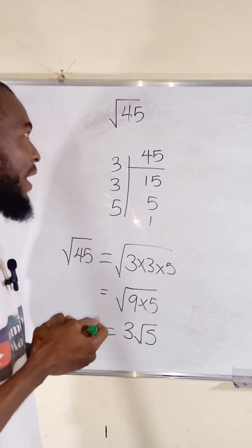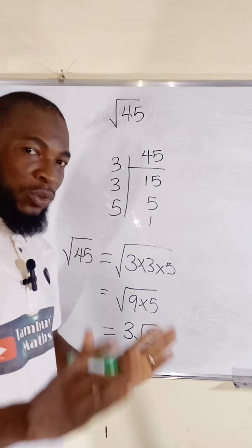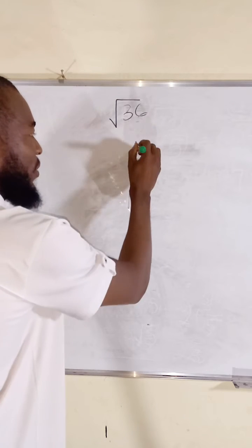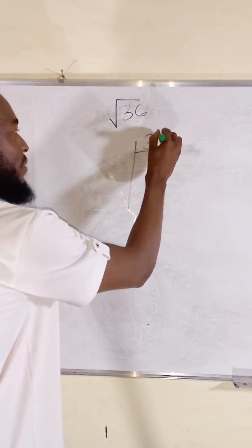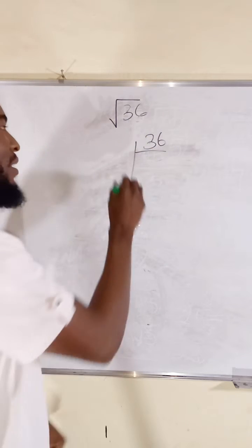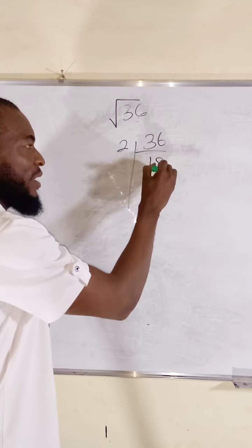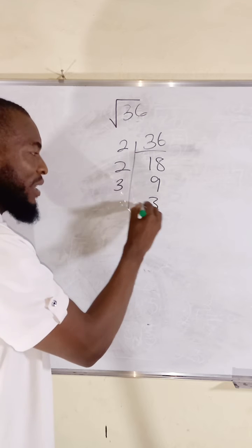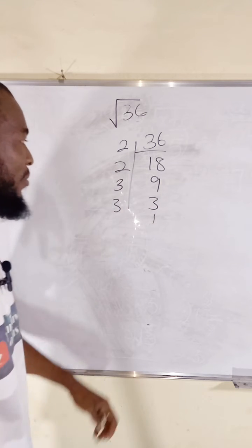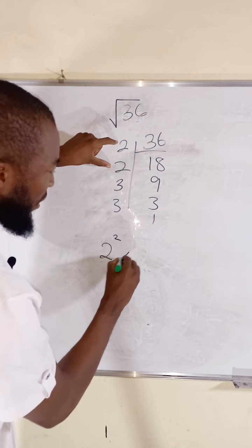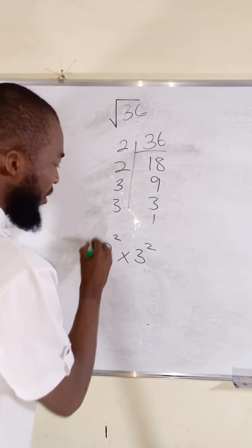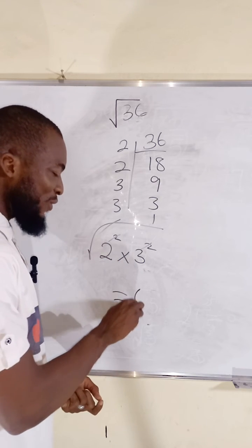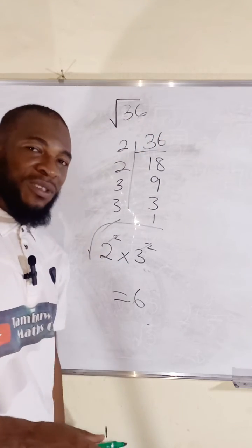If it is a perfect square number like 36, you're going to get a whole number. Let me give you that as a bonus. Successive division of 36: 2 can go in here 18 times, 2 here 9 times, 3 here 3 times, 3 here 1 time. We have 2 times 2 which is 2 squared, times 3 times 3 which is 3 squared. If you take the square root of this, the powers of 2 will cancel the square root, leaving only 2 times 3, which is equal to 6. Therefore, the square root of 36 is equal to 6.